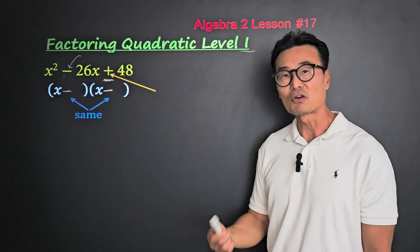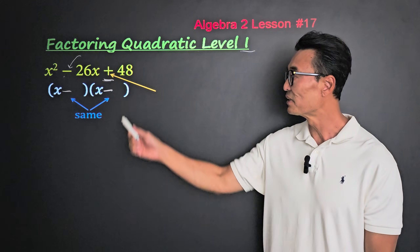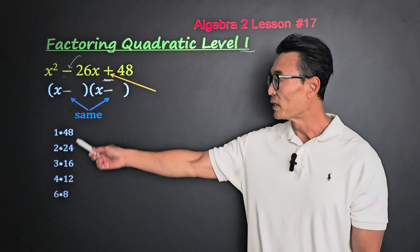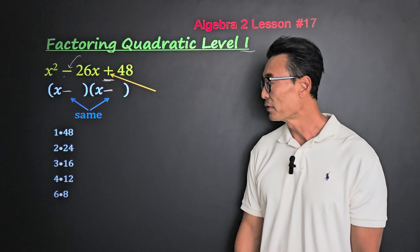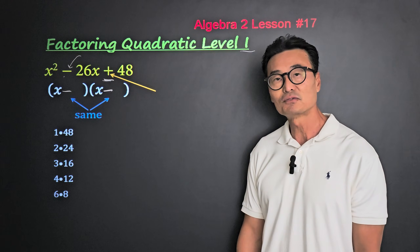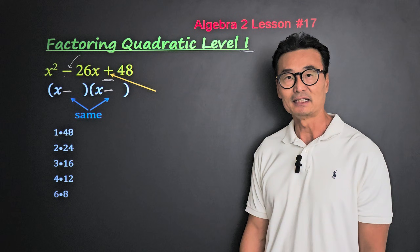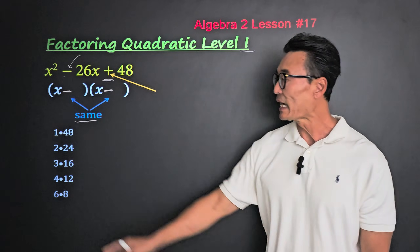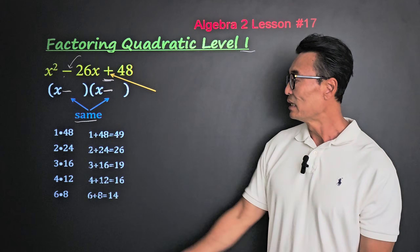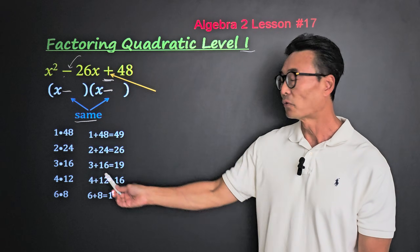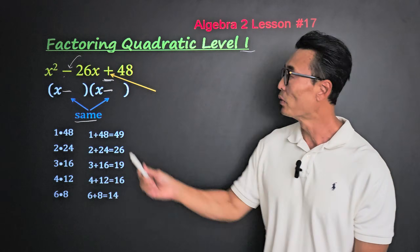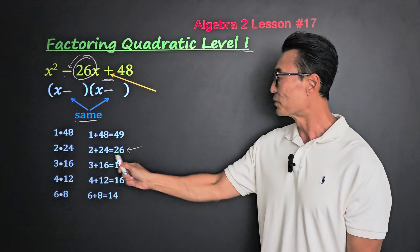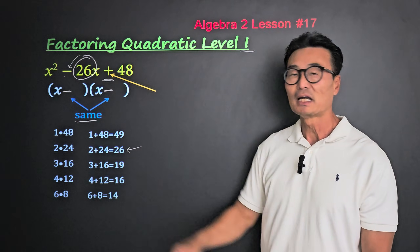Next, we want to write down all the pairs of numbers that give us 48 when multiplied, which are 1 and 48, 2 and 24, 3 and 16, 4 and 12, and 6 and 8. When the signs are the same, we're going to be adding these two numbers until we get the one that gives us 26, which is 2 and 24.